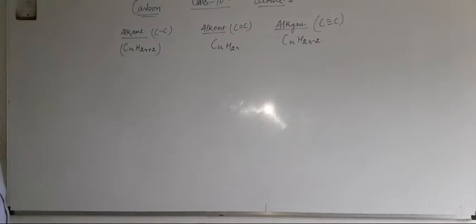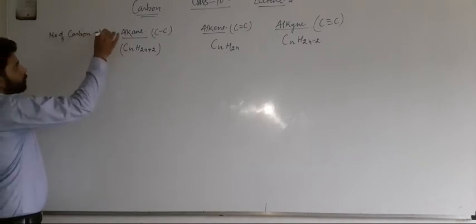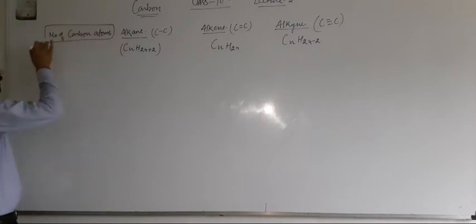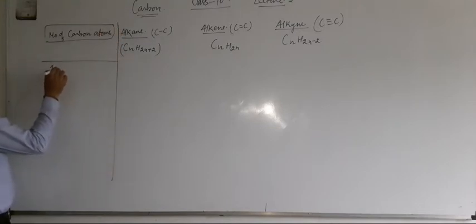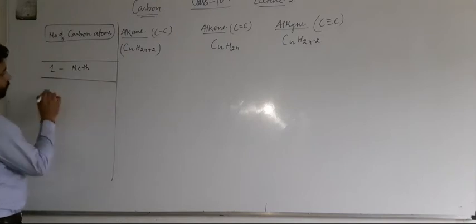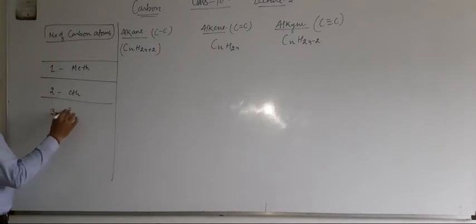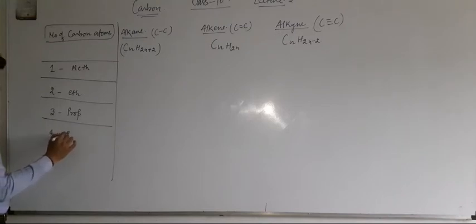Now, let's discuss the number of carbon atoms. When the carbon atom is one, we use 'meth'. When carbon atoms are two, we use 'eth'. For three, 'prop'. For four, 'but'.